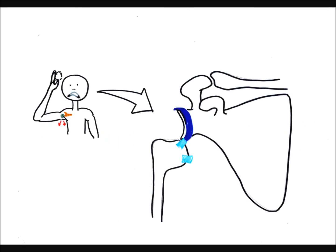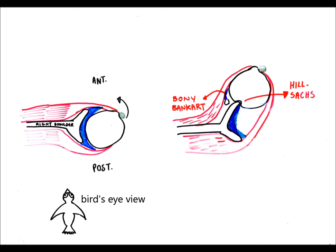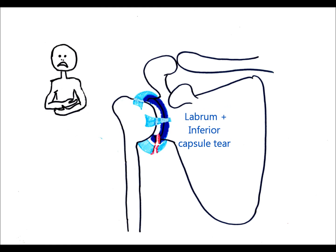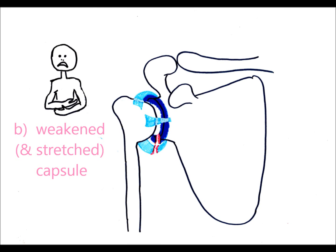Following an acute traumatic dislocation, the anterior inferior labrum may detach from the glenoid and break off a piece of bone along with it, creating a bony Bankart lesion. In association, the posterior lateral part of the humeral head may be depressed after being impacted against the joint socket — this is called a Hill-Sachs lesion. These lesions render the shoulder more susceptible to dislocation. In young adults, usually athletes, the labrum and inferior parts of the capsule are typically torn. They are prone to recurrent dislocations because a) recurrent dislocations are dependent on the age of first dislocation and b) less force is needed to overcome the weak capsule.